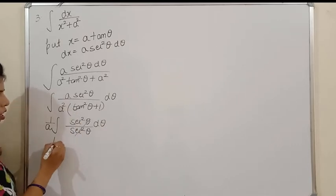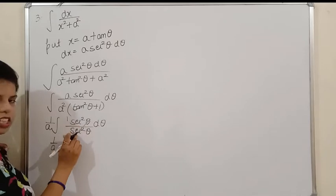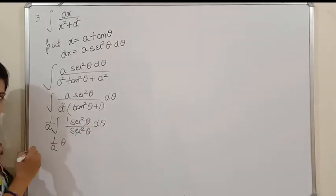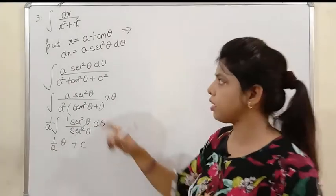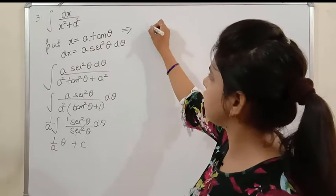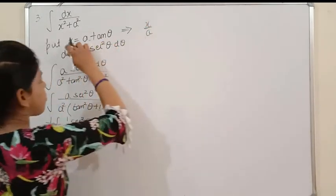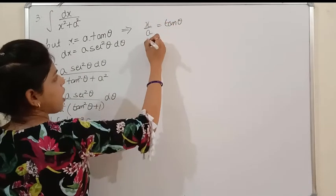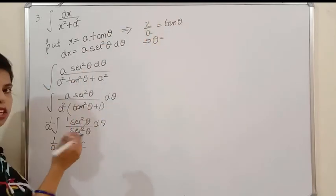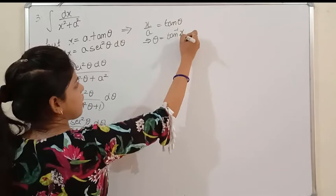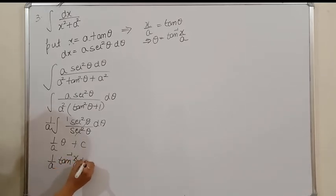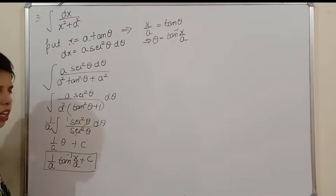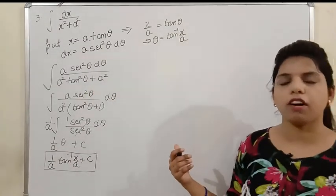The sec²θ terms cancel completely, leaving ∫1 dθ, whose integration is θ + c. Now eliminate θ: from x = a·tan θ, we get x/a = tan θ, so θ = tan⁻¹(x/a). Therefore the formula is (1/a)·tan⁻¹(x/a) + c. Remember this formula well — it will be used very frequently in Exercise 7.4.